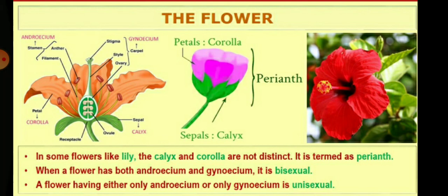I hope children this topic is clear. Any query you can write in the query box. Today's homework is to draw a labelled diagram of the flower and the inflorescence — cymose and racemose types of inflorescence — in your notebook. Thank you children.